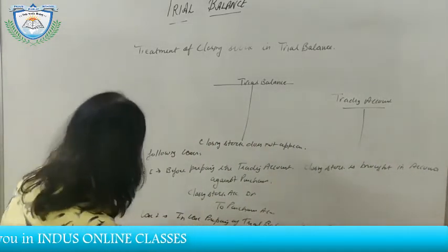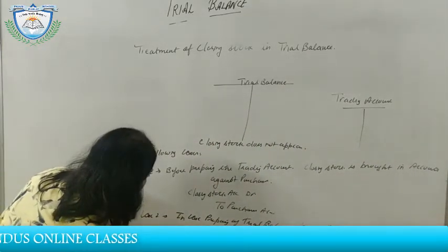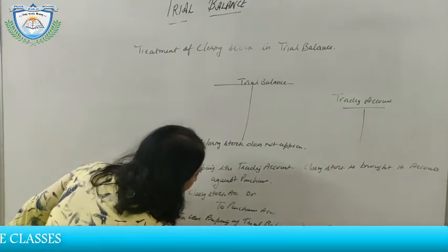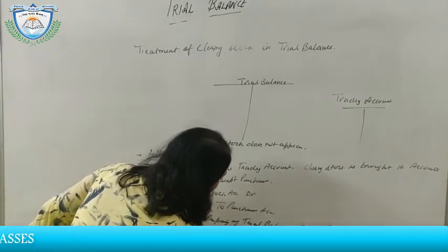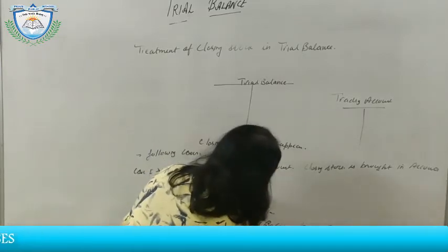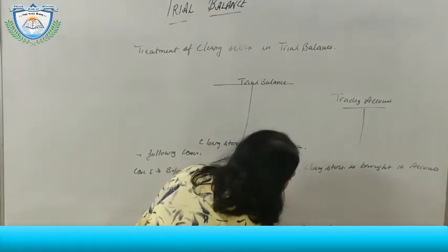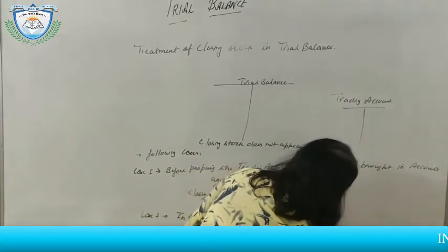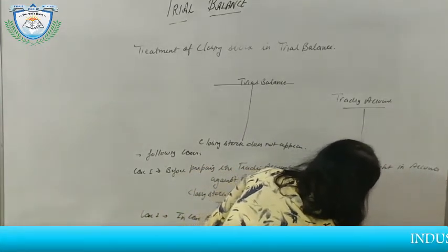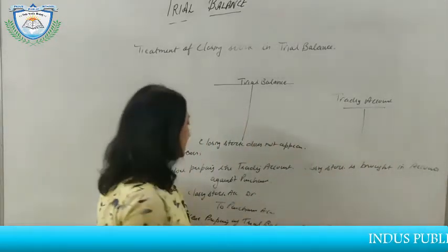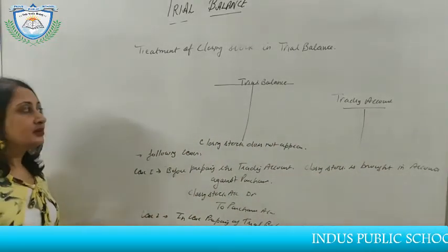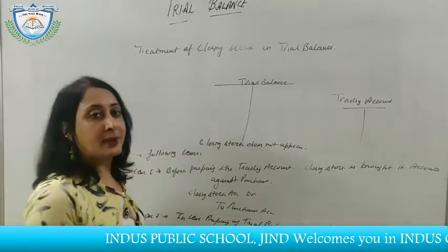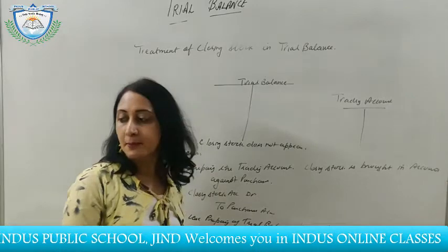Case 3: In the case where trial balance is prepared before passing the adjustment entries, closing stock will appear in trial balance. These are the three cases when closing stock is taken in trial balance. Now let's do a practical to understand it better.